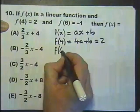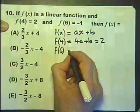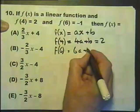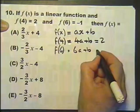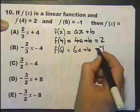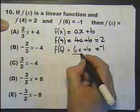And we'll substitute 6 in there to get 6a + b = -1. So here we have two equations which we should be able to solve.